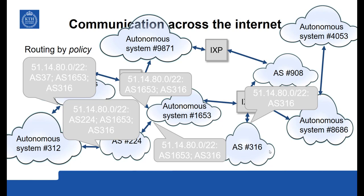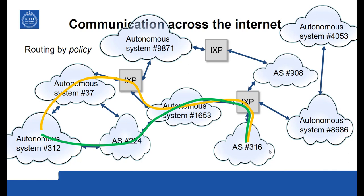There is also a second path where the same addresses could be routed via AS224 and AS1653 to reach AS316. So which of these two possible paths should be chosen by autonomous system 312? This is determined by policy. The policies could be anything — it could be the cost an autonomous system has to pay its peering neighbor to transfer traffic, or the reliability if an AS has a poor record of delivering data, or security where an AS is simply not trusted to forward traffic for a certain organization. Here AS224 is not trusted by AS312, so it selects the path via AS37 to forward data towards AS316.